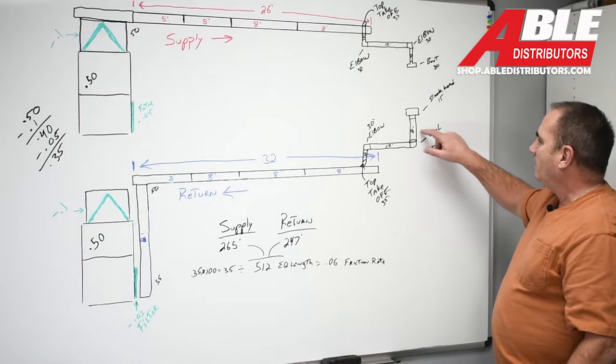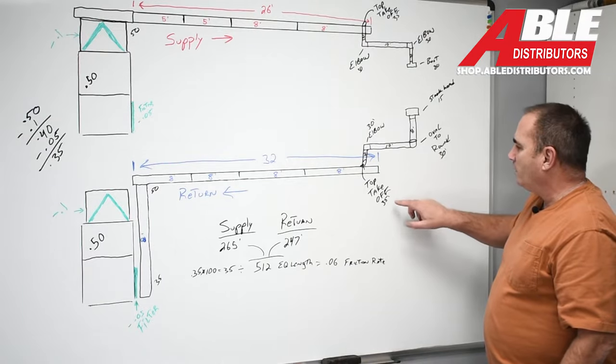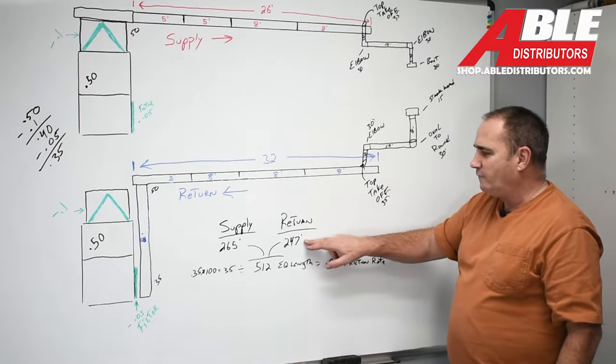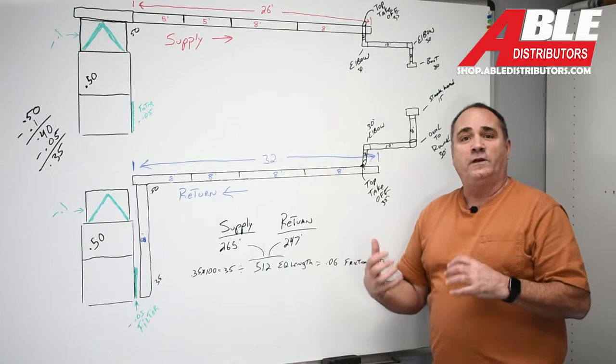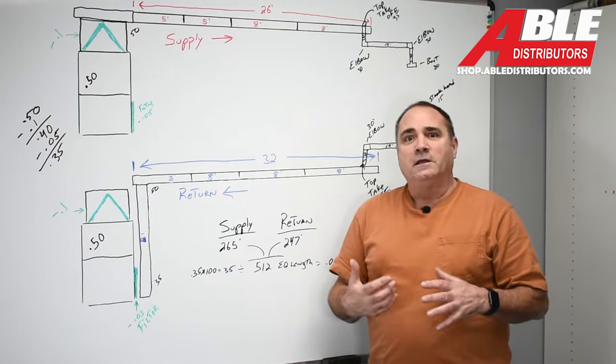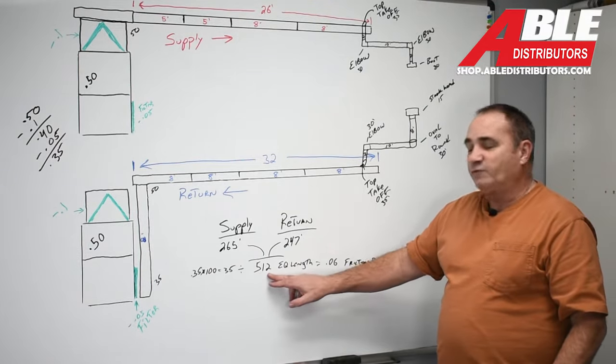So when we add all this up, add the elbow, the oval stack, the stack head, the oval around, the top takeoff, we have 247 equivalent feet on the return side. So now we add those two up, it's 512.